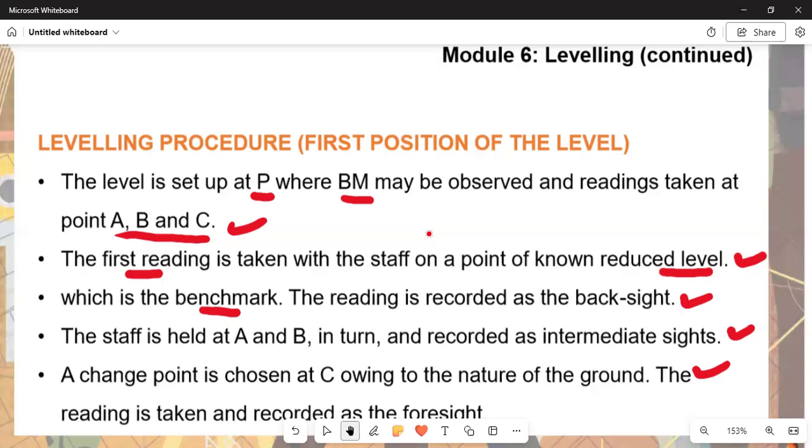It is not the primary sight that you can see, but it is an intermediate or the secondary one. That would require or that would force the change in point. A change point is chosen at C owing to the nature of the ground, and the reading is taken and it is recorded as the foresight.